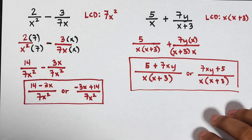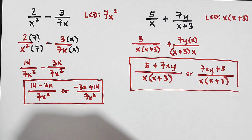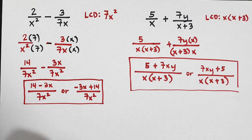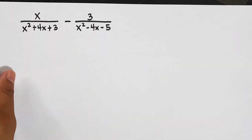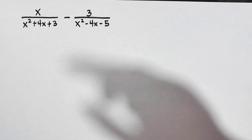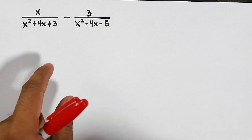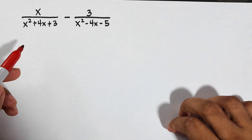As you can see, it's a bit complex, but if you master the technique of making the denominators the same, you'll understand how to perform addition and subtraction of rational algebraic expressions. Now let's continue with item number three. For item number three, we have denominators that are trinomials with different expressions.